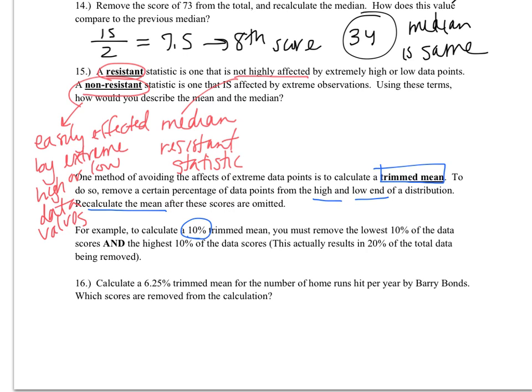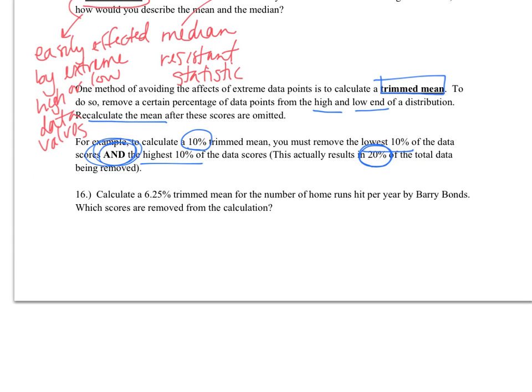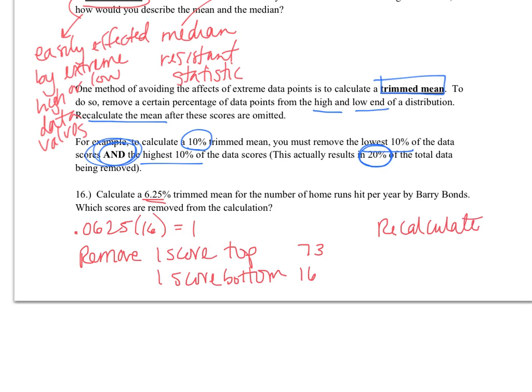So in this problem, we want to calculate a 10% trimmed mean, which means we remove the lowest 10% and the highest 10%. Often people only remove 10% of the scores total, and that is wrong. We're actually removing 20% of the total data points in the problem. So if we calculate a 6.25% trimmed mean, we have to first figure out, well, what is 6.25 of 16? So 0.0625 times 16 gives us 1. So that means that we want to remove one score from the top and one score from the bottom. So basically take away our highest and our lowest score. And our highest score is going to be 73. Our lowest score is going to be 16. And then after we've done that, we are going to recalculate our mean. And we are going to recalculate this out of the 14 remaining scores. And after we do this, we will get 34.143.